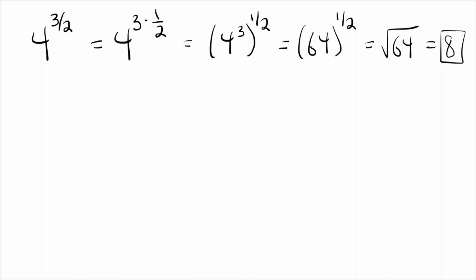So before we go to the next problem, I want to point out one little thing that we could have done differently. So we start out here, 4 to the 3 halves. Again, 3 halves is 3 times 1 half. But we also could write this backwards. 1 half times 3 is the same thing.